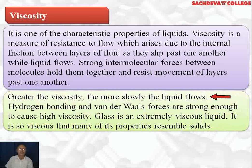Greater the viscosity, more slowly the liquid flows. For example, honey moves very slowly compared to water. Concentrated sulfuric acid is a viscous liquid — its high viscosity means it flows very slowly. Hydrogen bonding and van der Waals forces of attraction are strong enough to cause high viscosity.